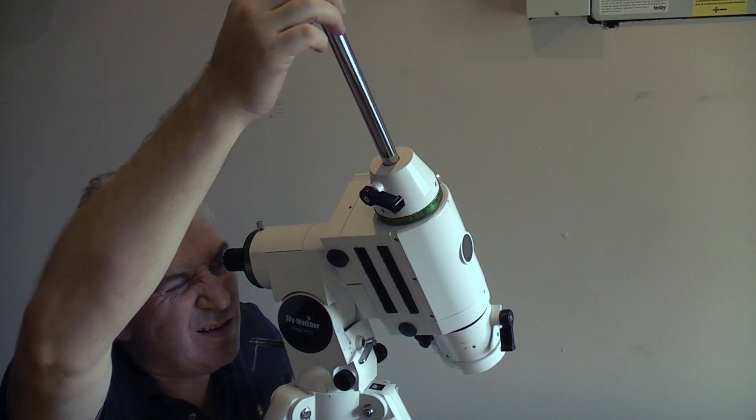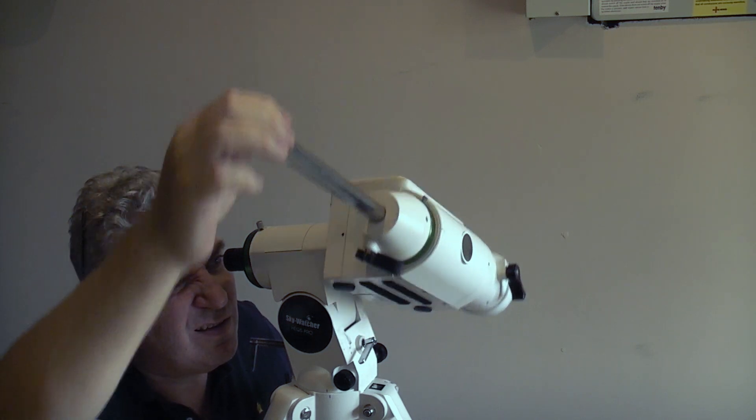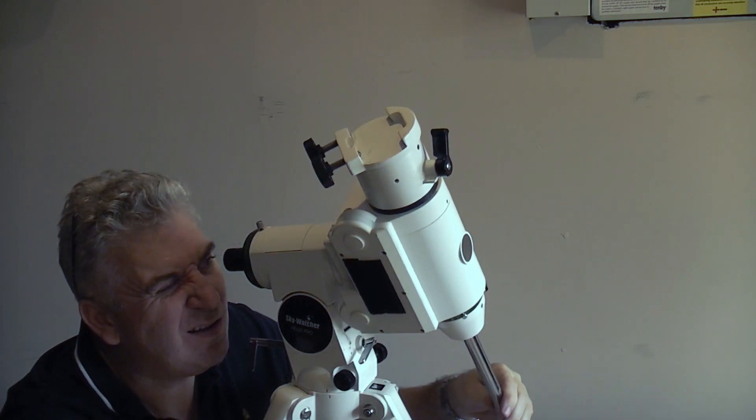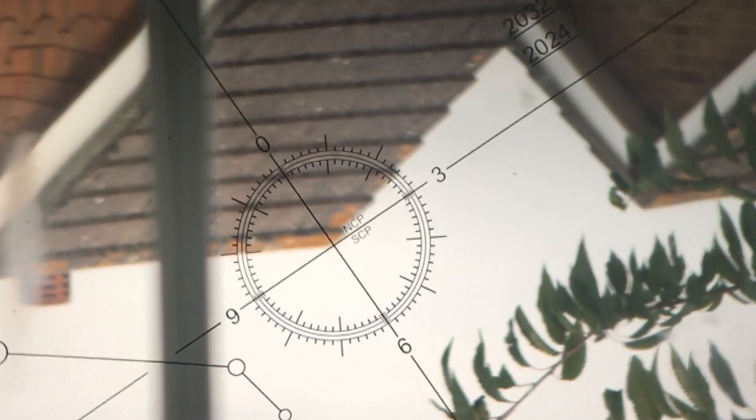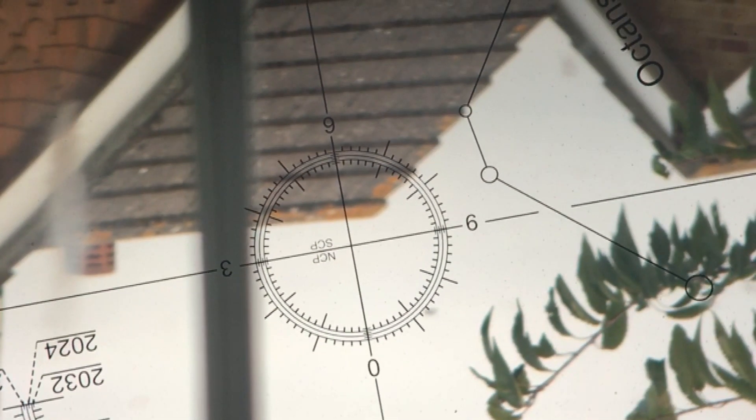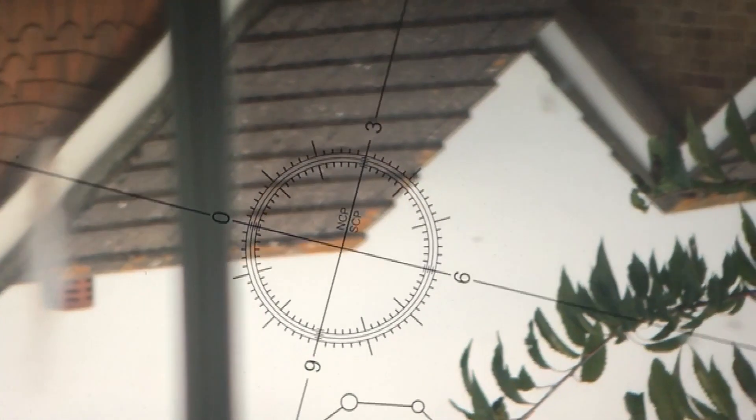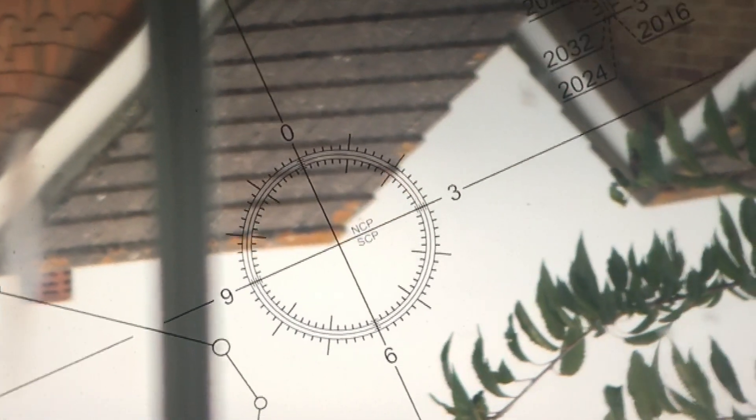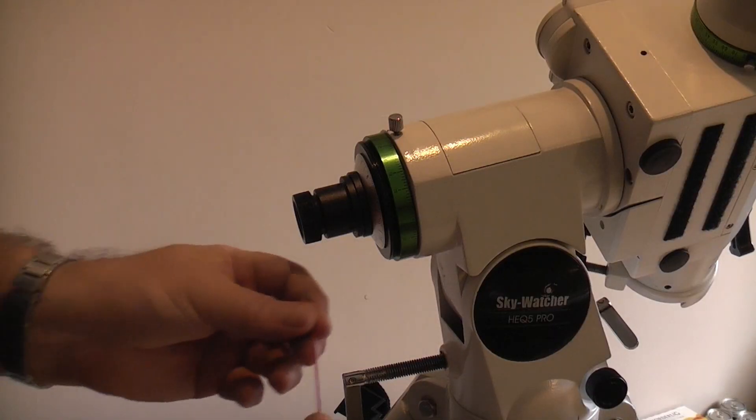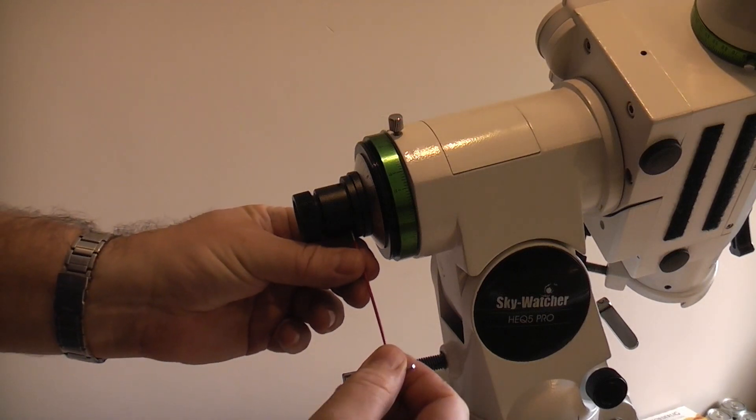So now we unlock the RA clutch and rotate the RA 180 degrees forwards and backwards and watch what happens to the crosshair position relative to the corner of the house. You can see it's shifting quite a lot, and that's because I've actually deliberately made my polar scope calibration bad.